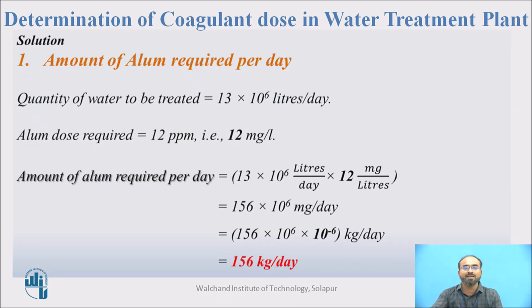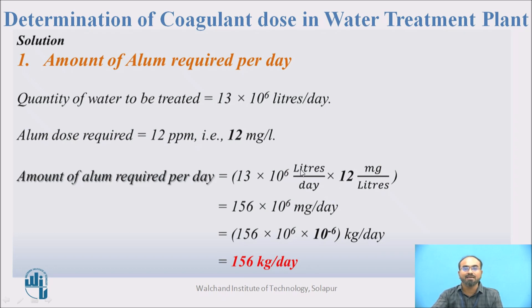First, calculate the amount of alum per day. The quantity of water is 13 × 10⁶ liters per day and the alum dose is 12 mg per liter. Multiplying flow rate by alum dose: 13 × 10⁶ L/day × 12 mg/L = 156 × 10⁶ mg/day. Converting to kg by multiplying by 10⁻⁶ gives 156 kg per day — that is the alum required.